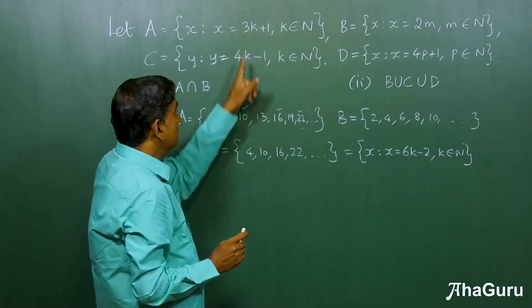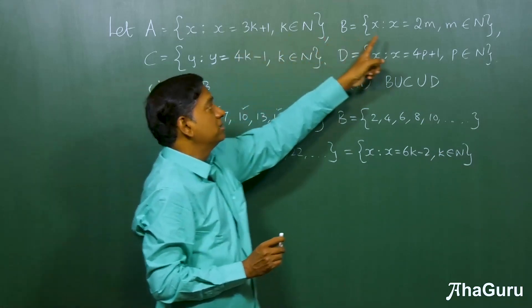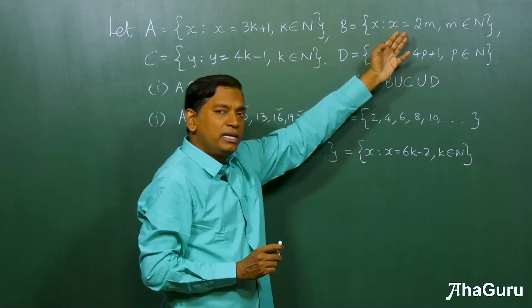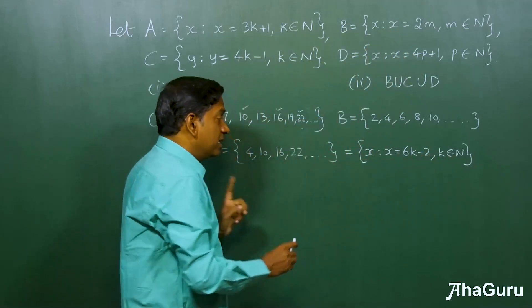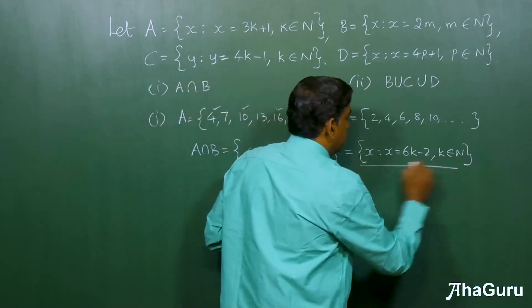Now, the point here is, this is 3k plus 1, this is 2m, but it could have been 2k also, but the answer looks very different, right? That is the thing that we need to keep in mind.